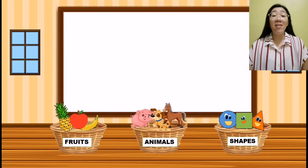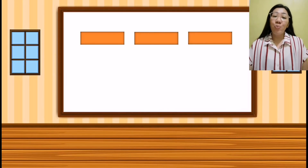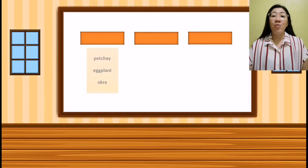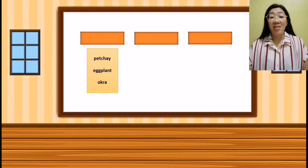Wow! We are done sorting these pictures according to its category. Now let's have another activity. I have prepared different groups of words and I want you to help me classify these words according to its category. Our first group of words are chive, eggplant, and okra. They are vegetables.